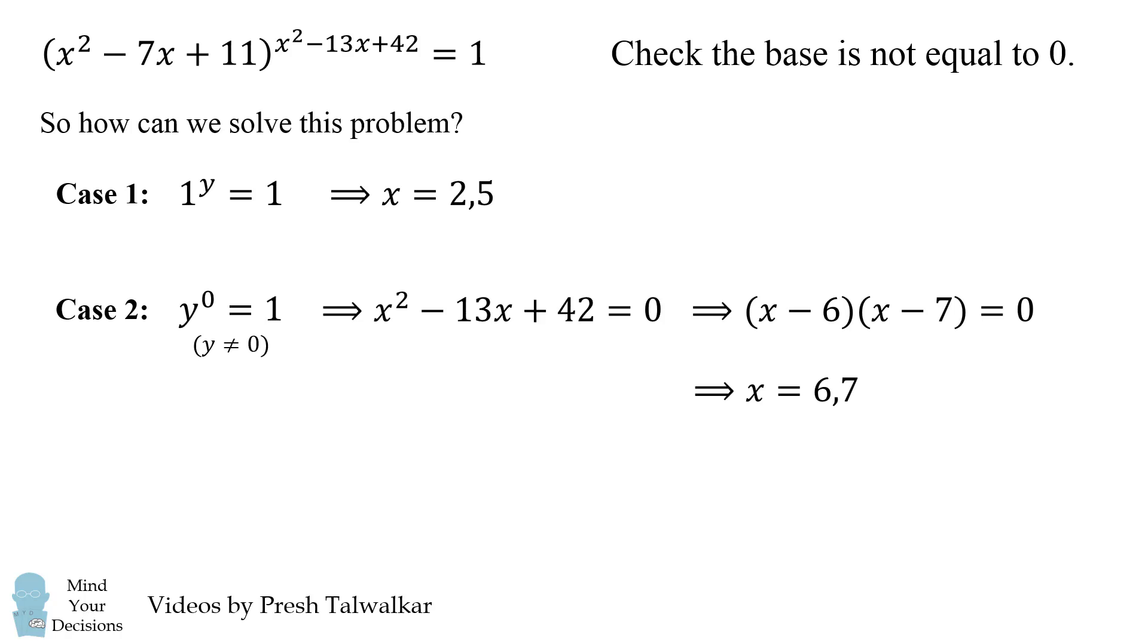Now we also want to check that the base is not equal to 0 because 0^0 is an indeterminate form. So we quickly do that and we see we have no problem. So in fact, x = 6 and x = 7 are also solutions.